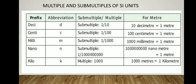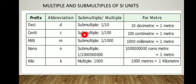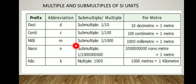Multiples and sub-multiples of SI units. Decimeter — abbreviation D, sub-multiple: one meter equals ten decimeters. Centimeter — abbreviation C, sub-multiple: one meter equals one hundred centimeters. Millimeter — abbreviation M, sub-multiple: one meter equals one thousand millimeters. Next: nano.